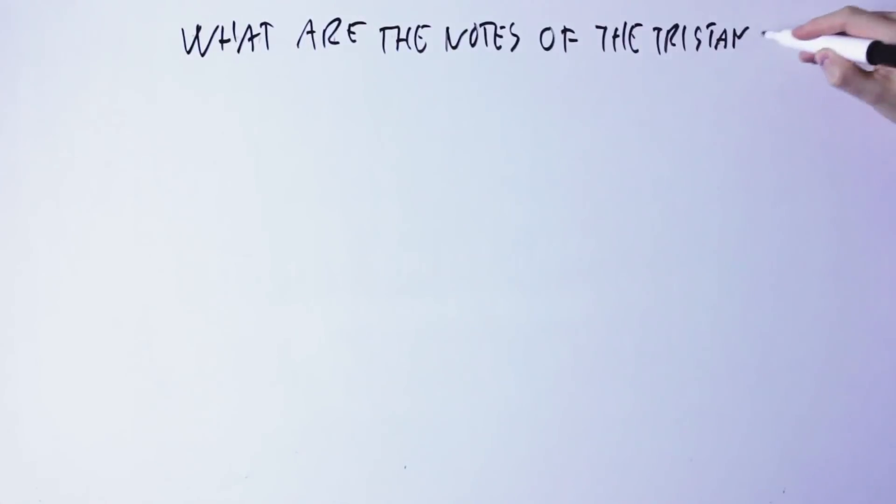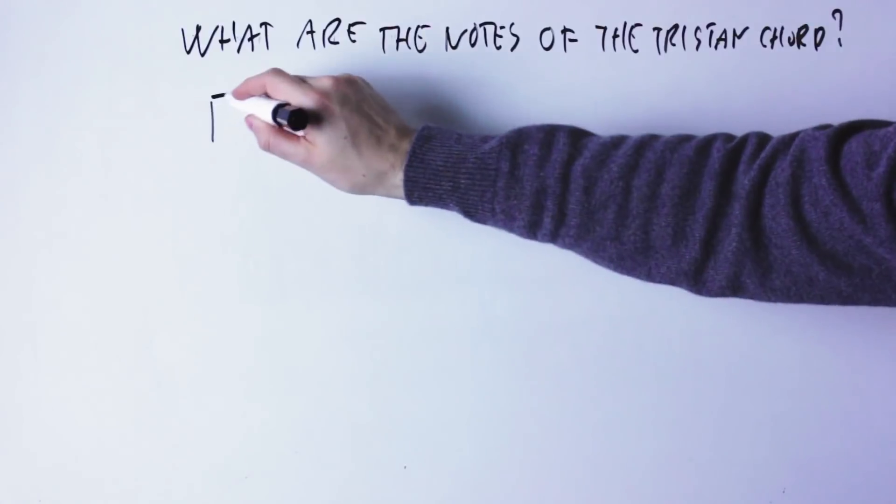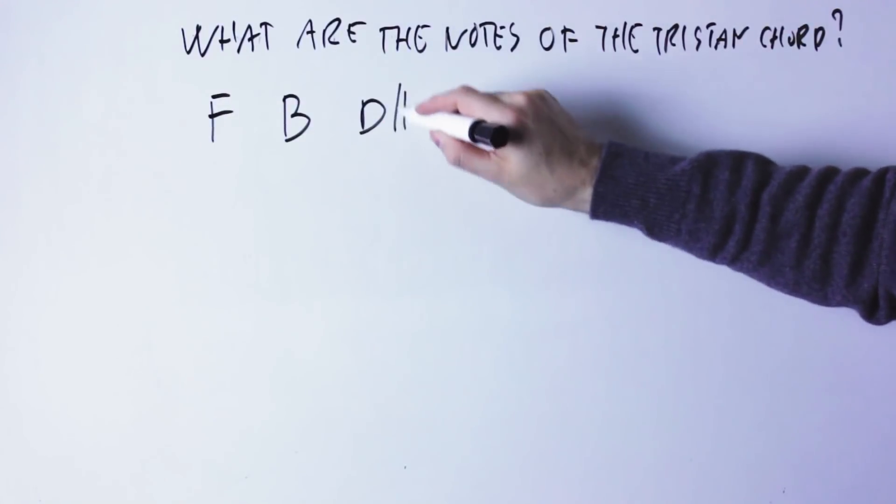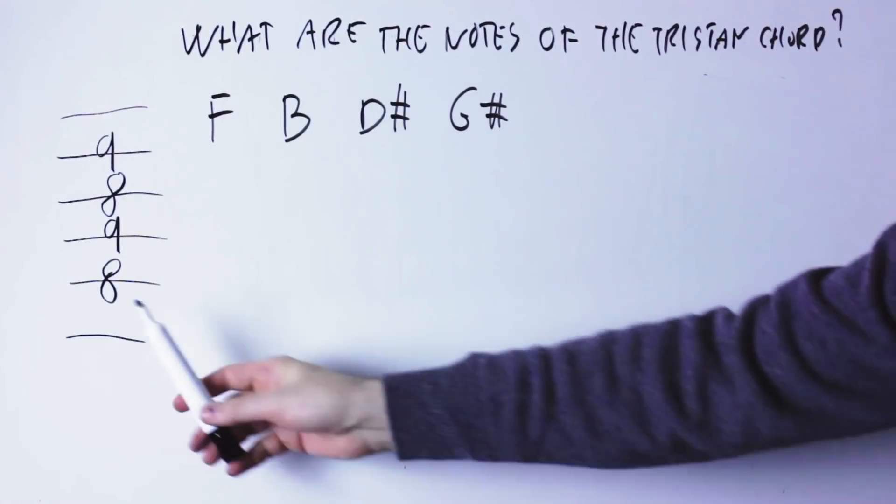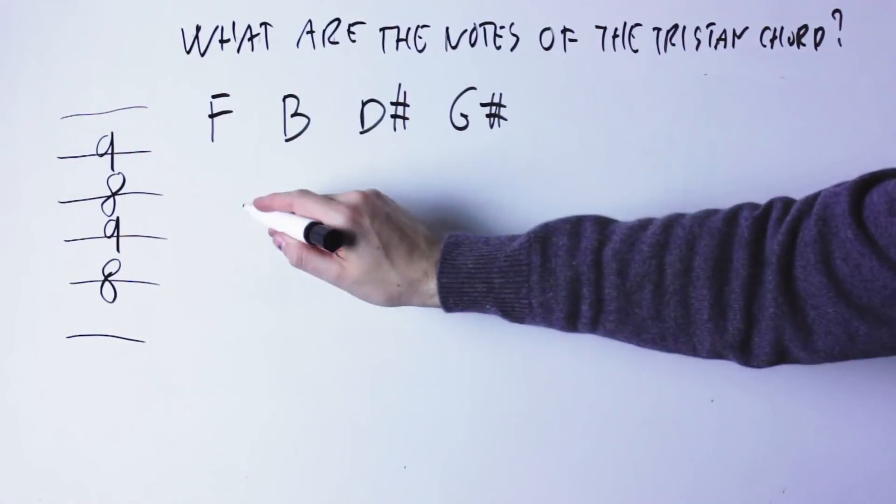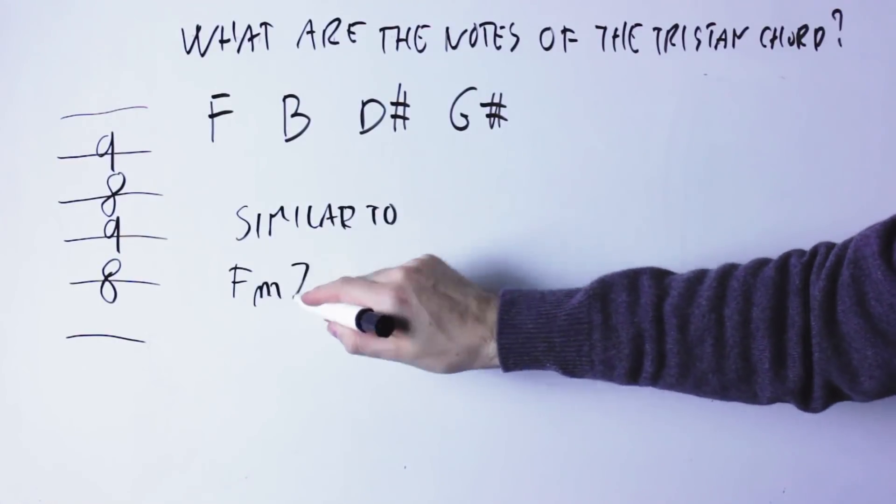The Tristan chord, as notated by Wagner, is made by the notes F, B, D sharp, G sharp. If we play it on the guitar, this chord looks similar to a F minor 7 flat 5...